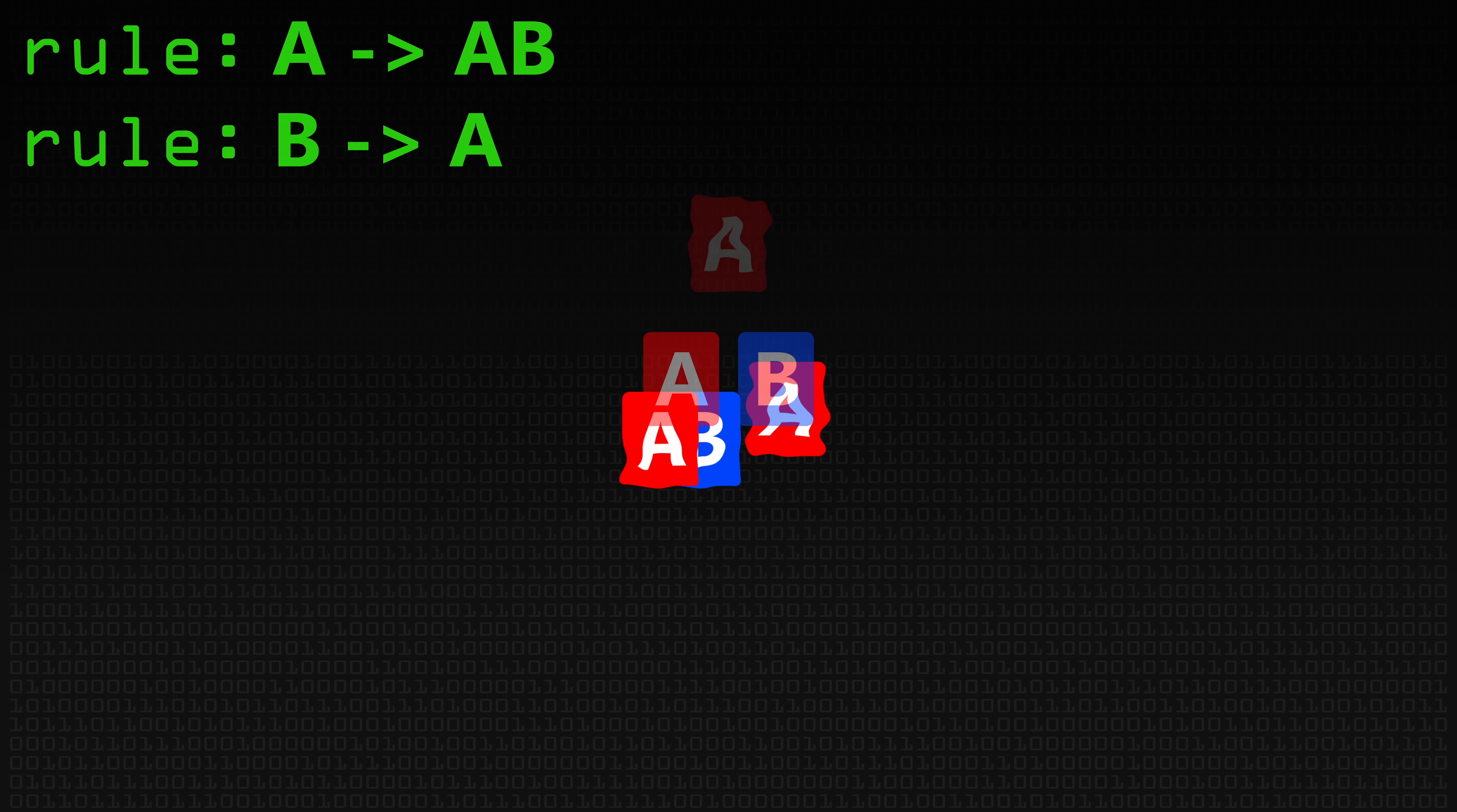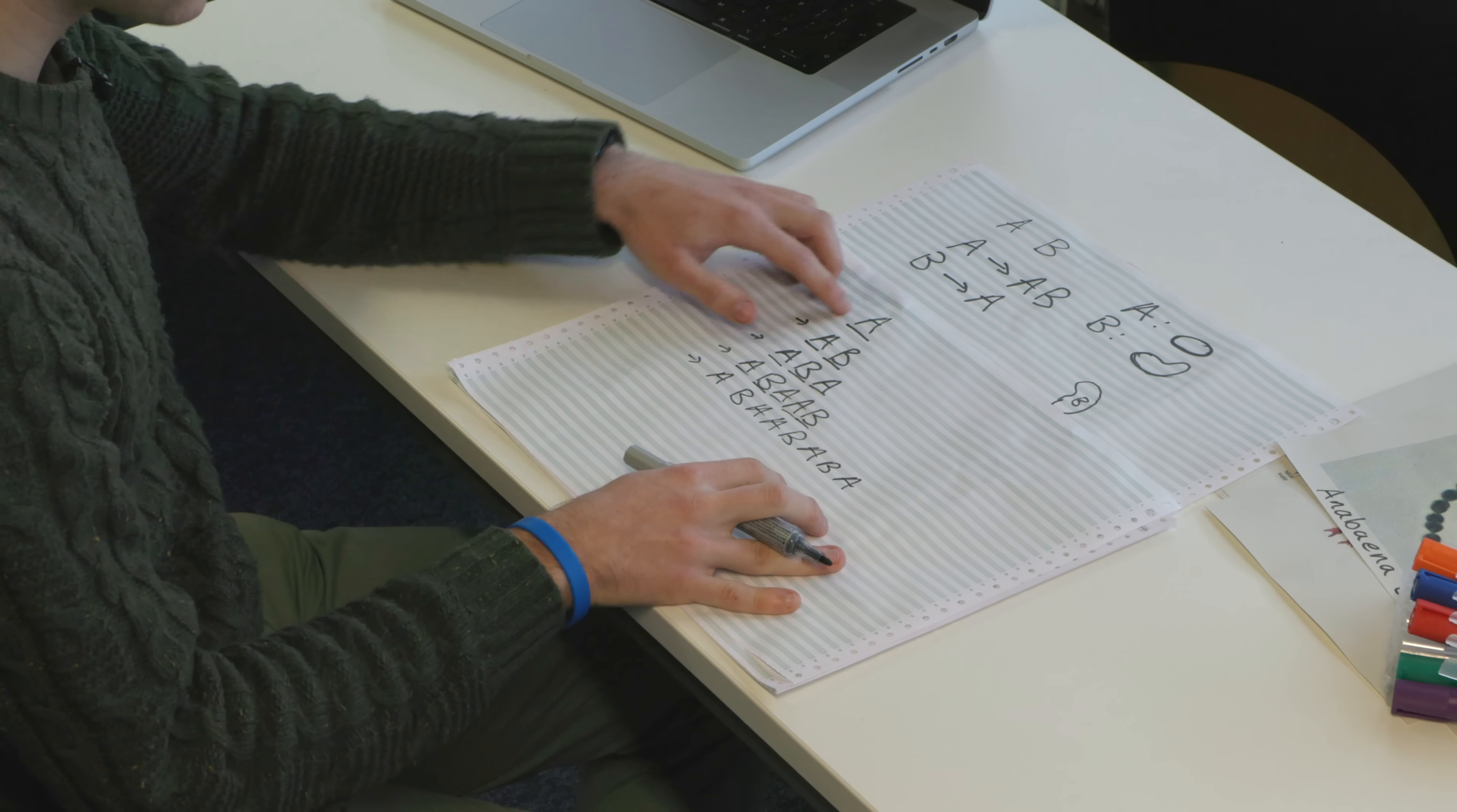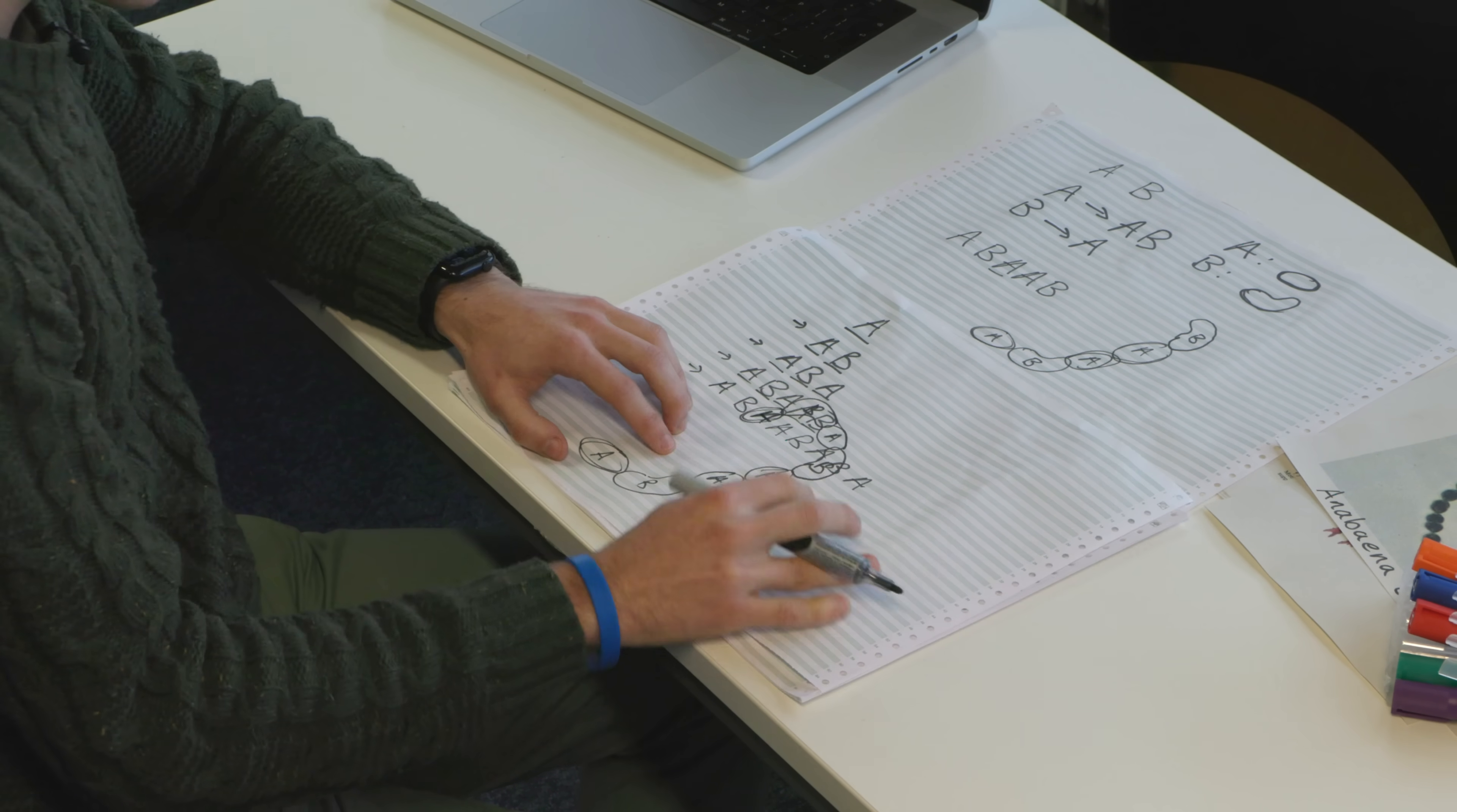And we can repeat this, the A gives us another A, B, and then this B here gives us an A. I can repeat this again, this A gives us an A, B, this B gives us an A, and this final A gives us an A and a B. I'll do it one more time. So here's our organism, and this is grown naturally from this seed according to our rules, and if I draw this out again, and here's our organism.